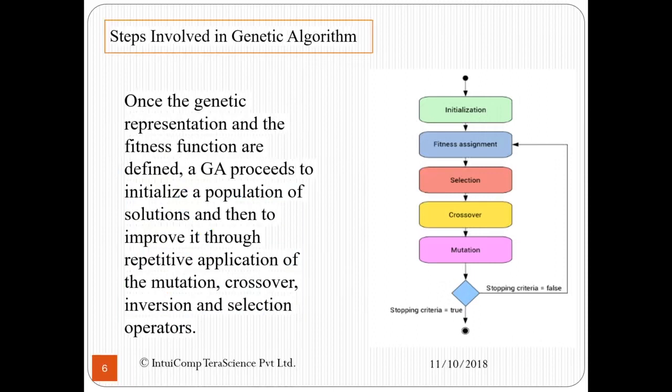So now we come to the steps involved in genetic algorithms. Once the genetic representation and the fitness function are defined, a GA proceeds to initialize a population of solutions and then to improve it through repetitive application of mutation, crossover, inversion, and selection, which are all operators in the genetic paradigm. Here is a flowchart which can guide you better in this process. We first go through initialization, then fitness assignment, then selection, then crossover, and then mutation. We repeat this process unless the stopping criteria is met.